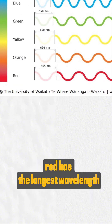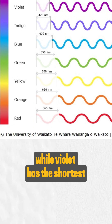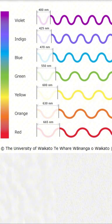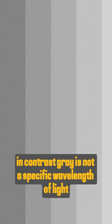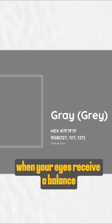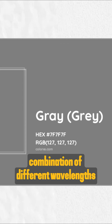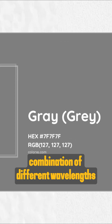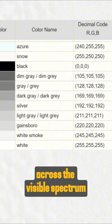Red has the longest wavelength, while violet has the shortest. In contrast, gray is not a specific wavelength of light, but rather a perception that arises when your eyes receive a balanced combination of different wavelengths across the visible spectrum.